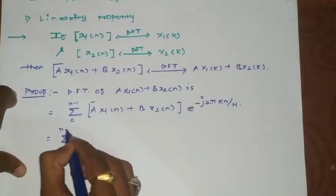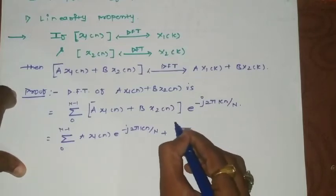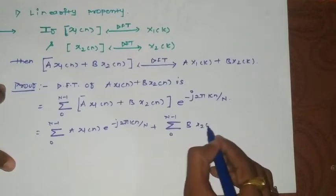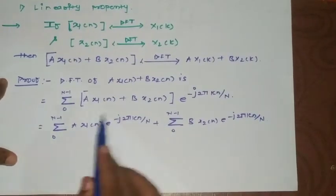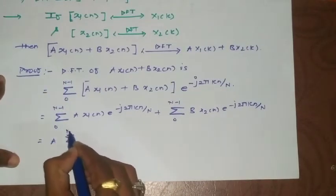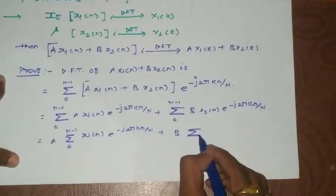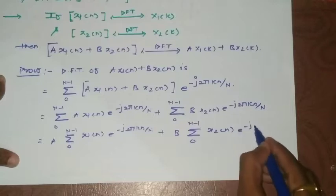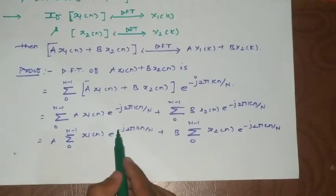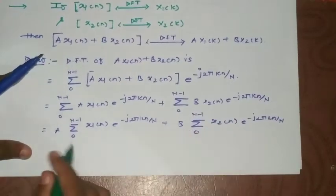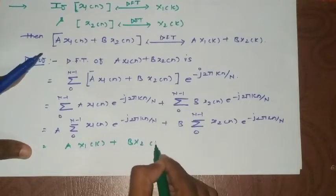Multiplying the exponential term with both terms gives the summation of ax1(n)·e^(-j2πkn/N) plus the summation of bx2(n)·e^(-j2πkn/N). Taking the constants outside, we get a·Σx1(n)·e^(-j2πkn/N) + b·Σx2(n)·e^(-j2πkn/N). Each of these is the Fourier transform of the respective sequence.